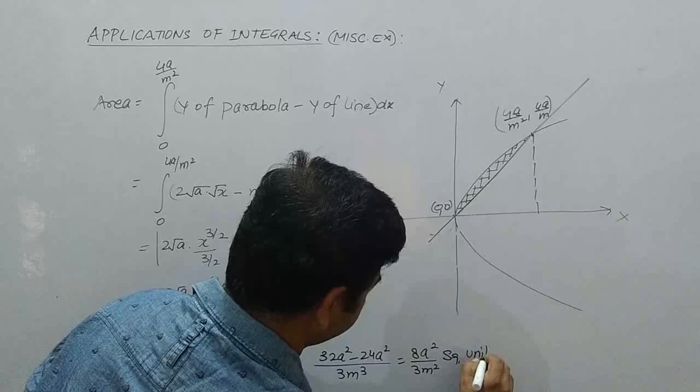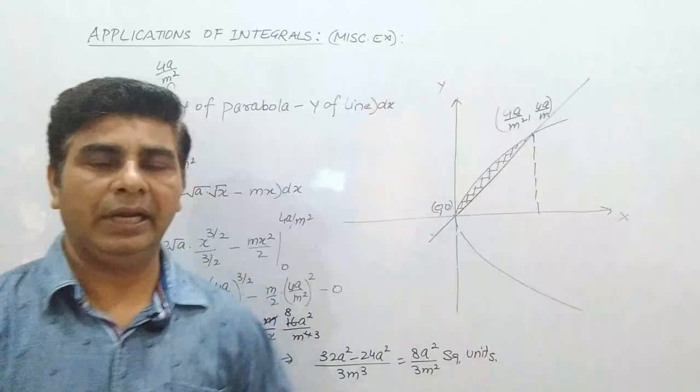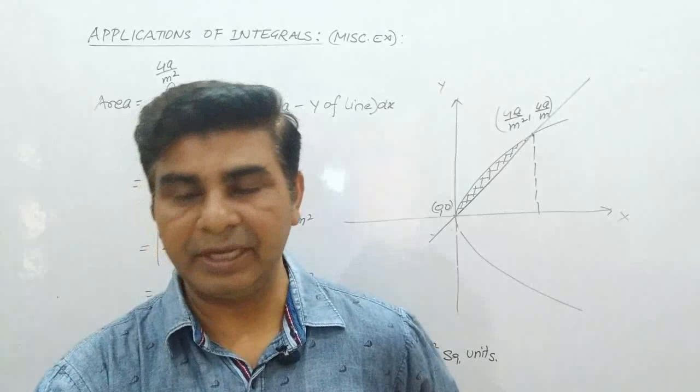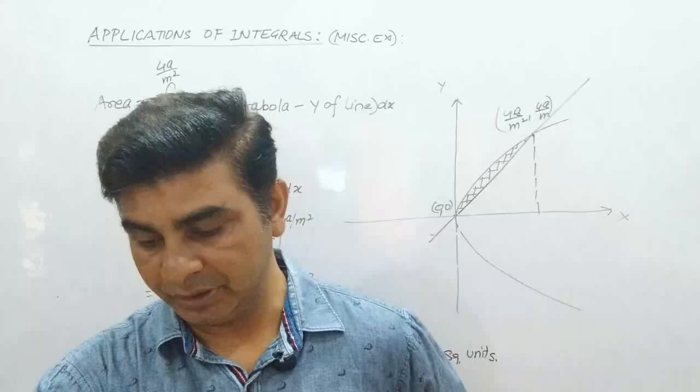This was question number 6. Question number 7 is homework for you — a parabola and a line are given, and you must solve it by yourself. Question number 8 involves an ellipse and a line, and we will do that in the next video. Thank you.